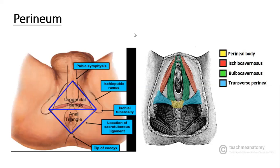This is an anatomical region in the pelvis. You can say it is that anatomical region located in the human body between the two thighs, and it represents the most inferior part of the pelvic outlet.